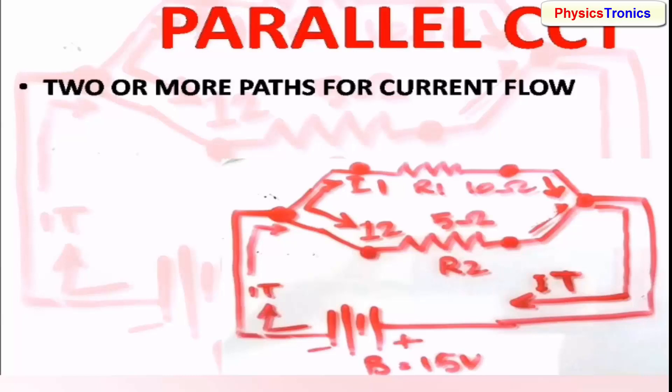What is a parallel circuit? Any circuit where current has more than one path is called a parallel circuit. The current takes more than one path in the circuit. The components in this configuration are in parallel.